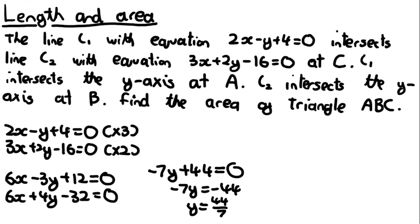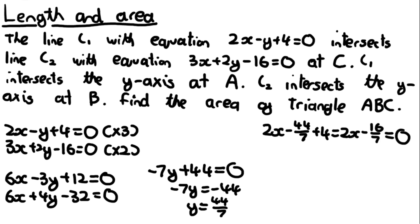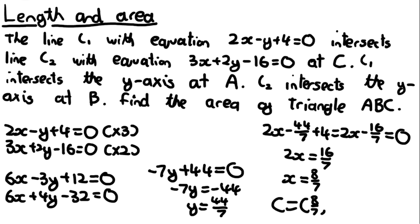To find the x-coordinate, substitute y equals 44 over 7 into the first equation: 2x minus 44 over 7 plus 4 equals 0, which simplifies to 2x minus 16 over 7 equals 0, so 2x equals 16 over 7, giving x equals 8 over 7. Therefore, the coordinate of C is (8/7, 44/7).